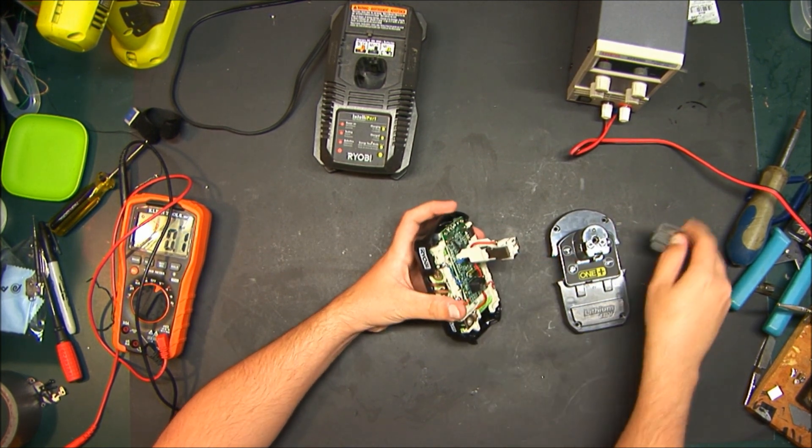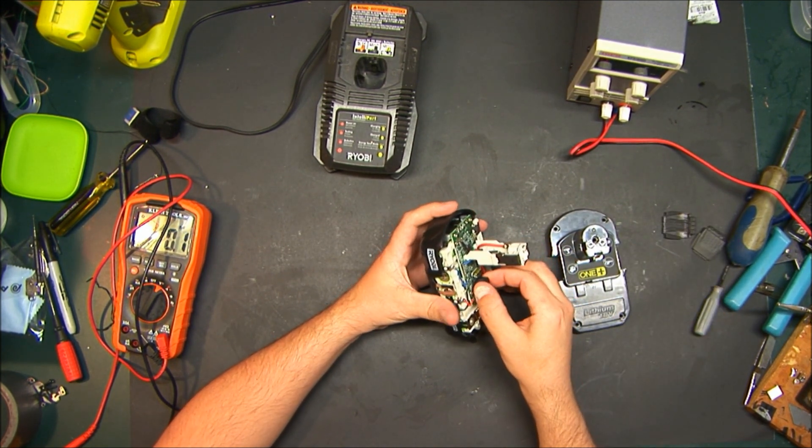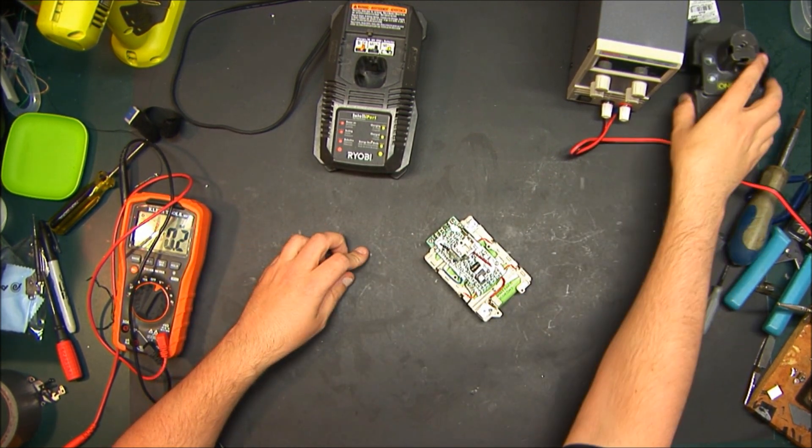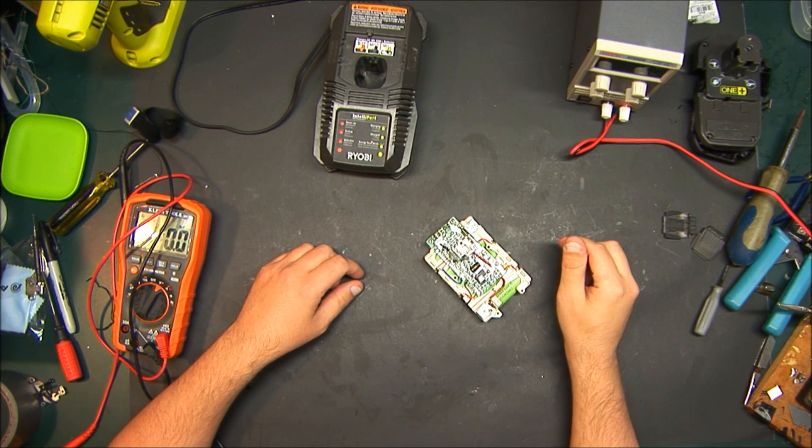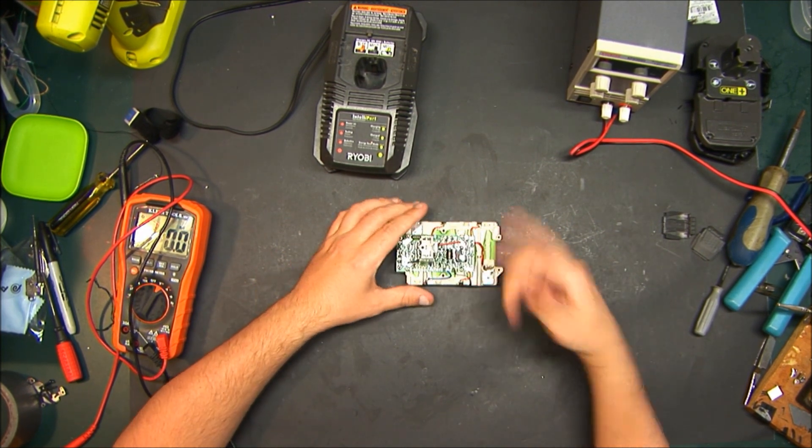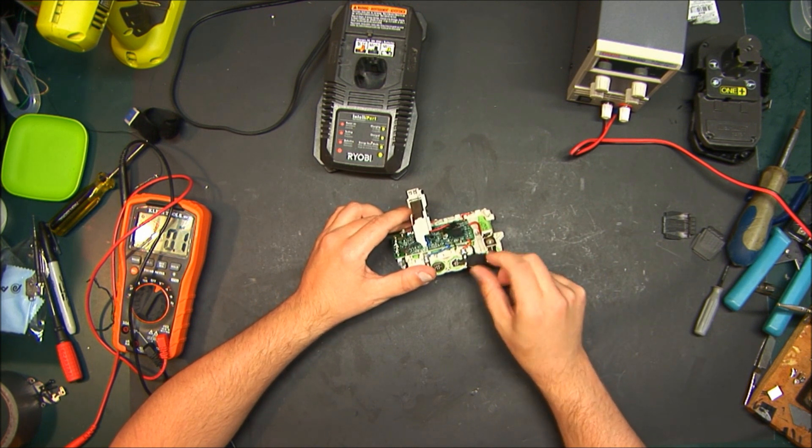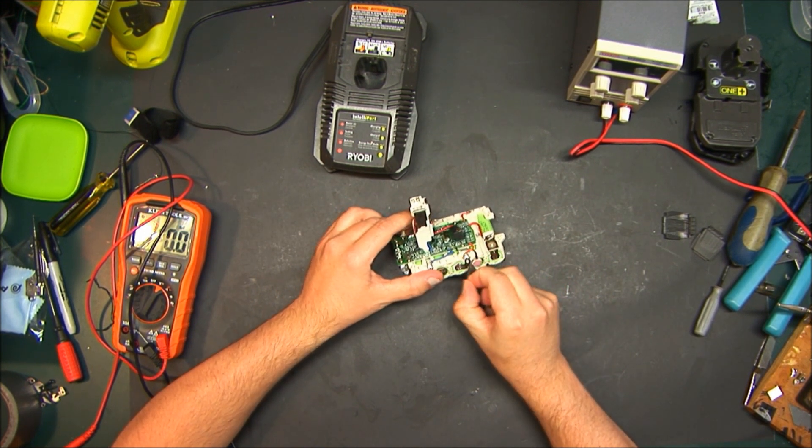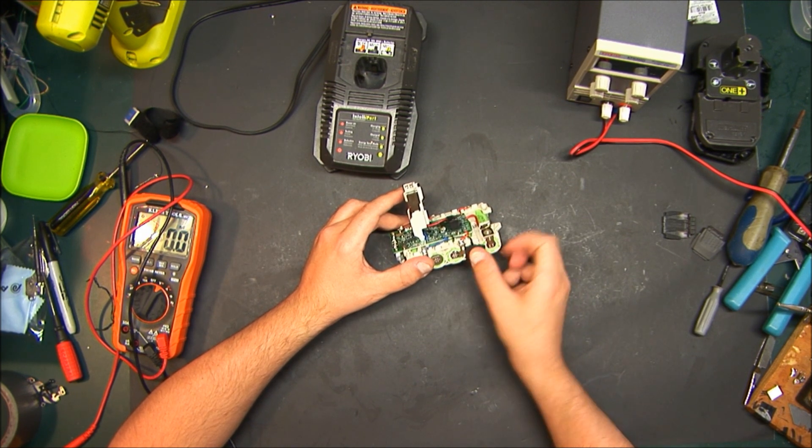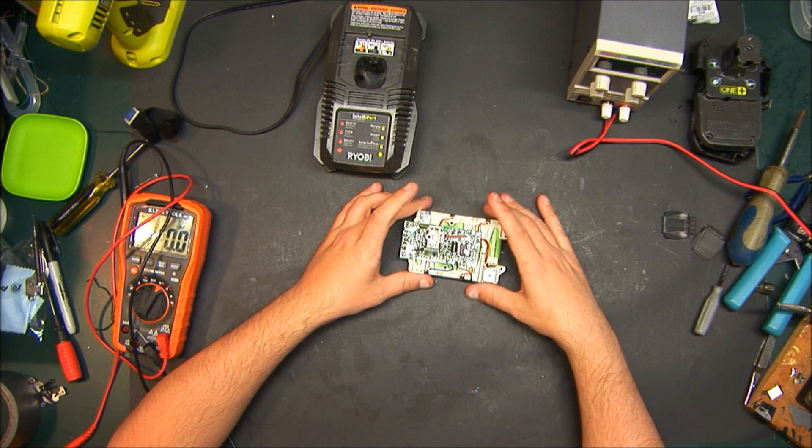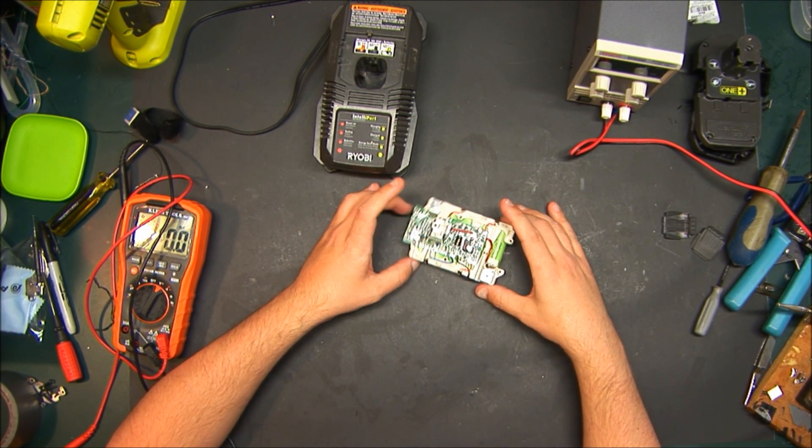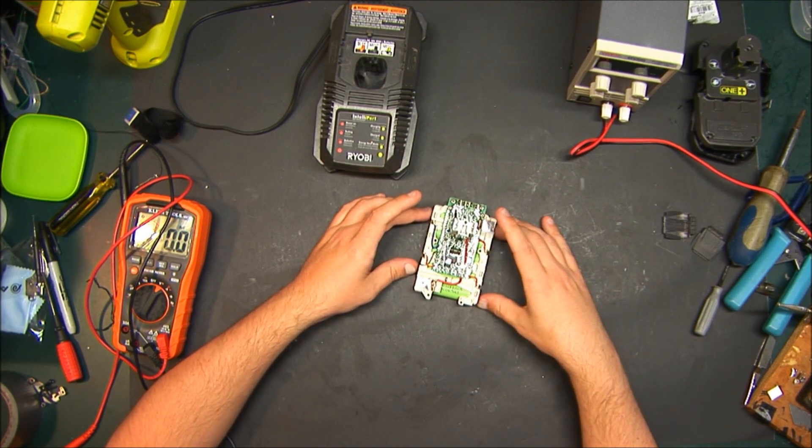The other thing it could be is a thermal protection. Either they use a thermistor or a thermal fuse. If this overheated, it could have blown the thermal fuse. On this one here, there's a thermistor on the other side of this pad that reads the temperature of the cells. If it gets too hot, it lowers the charging current or the amount of power going out of it.